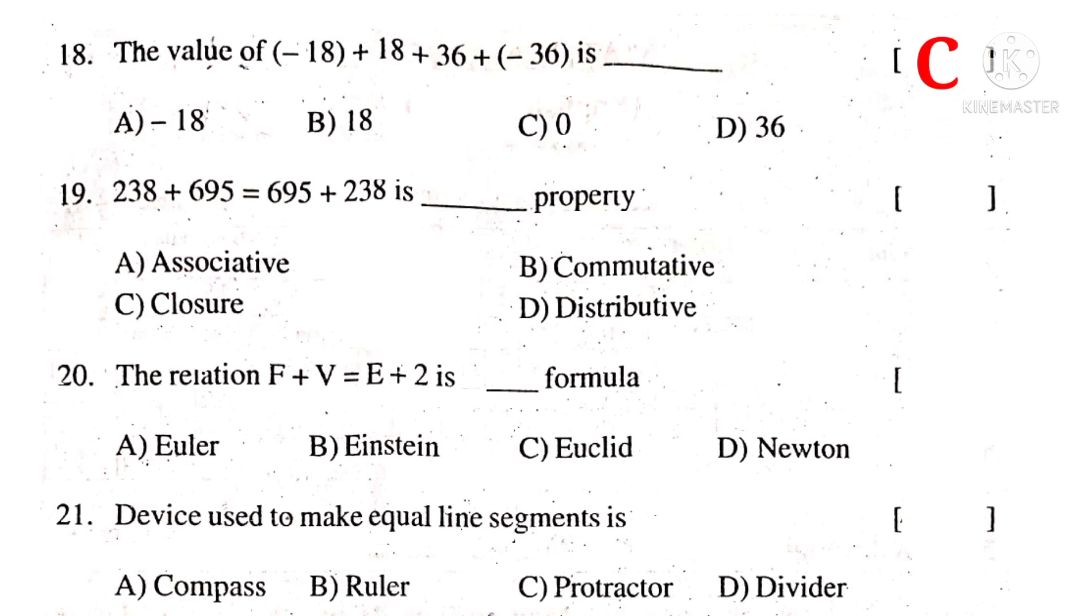19. 238 plus 695 is equal to 695 plus 238. Observe that left side numbers and right side numbers both are same but they are interchanged. So this property is called the commutative property. So the correct choice is B.